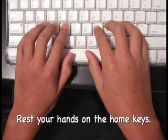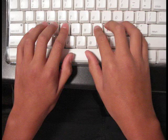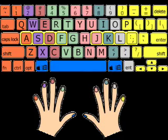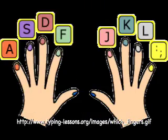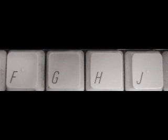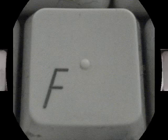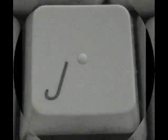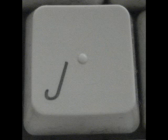While not typing, your fingers should be resting on the home keys as you see here. Here's another color-coded keyboard with the home keys outlined in yellow. The home keys are A, S, D, F for the left hand, and J, K, L, and semicolon for the right hand. A good trick to find the home keys without looking at the keyboard is to feel for the raised dots on the F key and the J key. Your left index finger should feel for the dot on the F key, and your right index finger should feel for the dot on the J key.